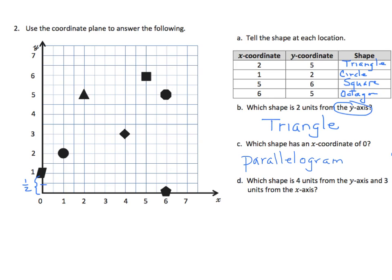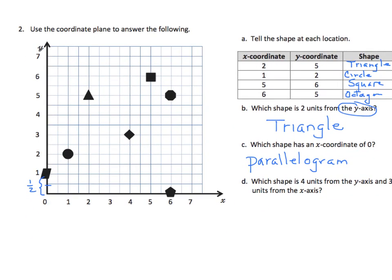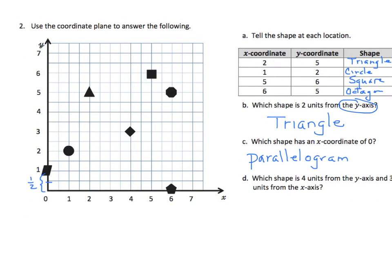And which shape is 4 units from the y-axis and 3 units from the x-axis? And again, we're going to see some interesting relationships. So 4 units from the y-axis. There's our y-axis. Here's our y-axis. We want to go 4 units from there. 1, 2, 3, 4. If we're talking about 4 units from the y-axis, we're actually talking about an x value of 4. So we're on this line right here.